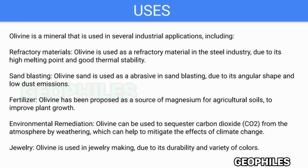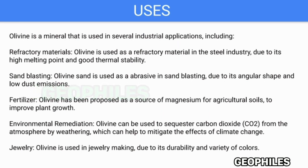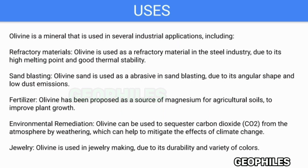Fertilizer: Olivine has been proposed as a source of magnesium for agricultural soils to improve plant growth. Environmental Remediation: Olivine can be used to sequester carbon dioxide (CO2) from the atmosphere by weathering, which can help to mitigate the effects of climate change.